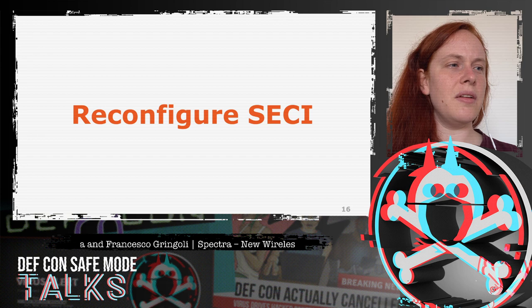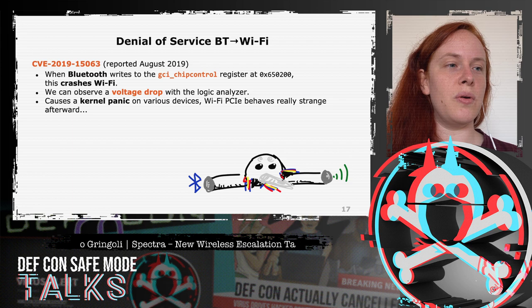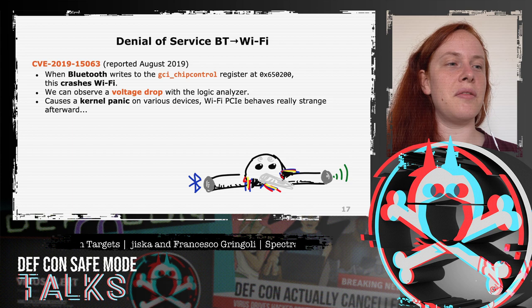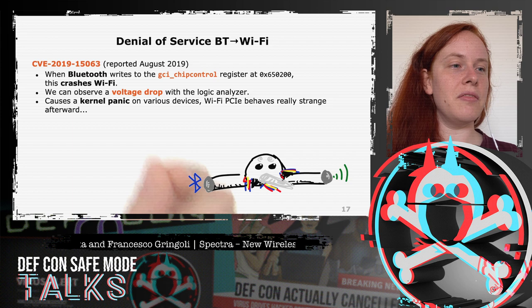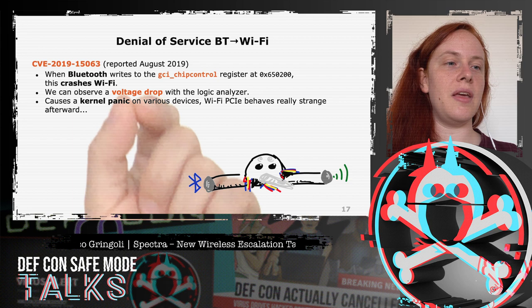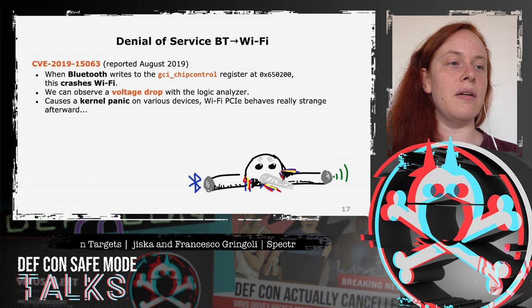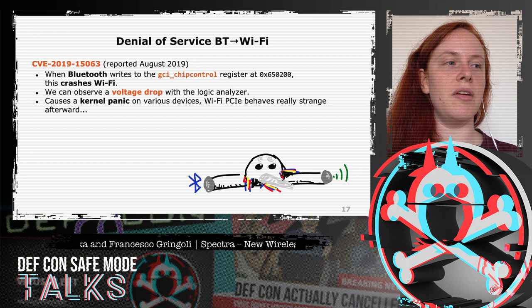For the first attack, understanding all the protocol details wasn't necessary — it's a simple reconfiguration of the interface. There are many registers mapped into the Bluetooth ARM core. After trying to understand them all, Francesco suggested just writing to all registers and seeing what breaks. Writing 0xFF into the GCI chip control crashes Wi-Fi, causing a visible voltage drop on a logic analyzer. On some devices this even causes a kernel panic, as Wi-Fi may stop or spam data over PCI Express.